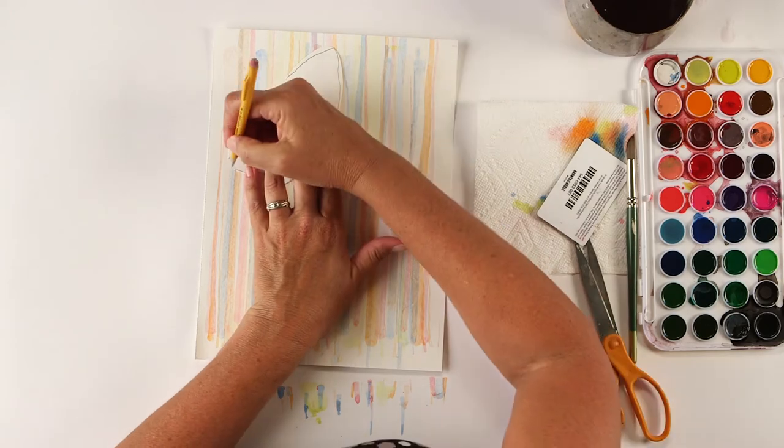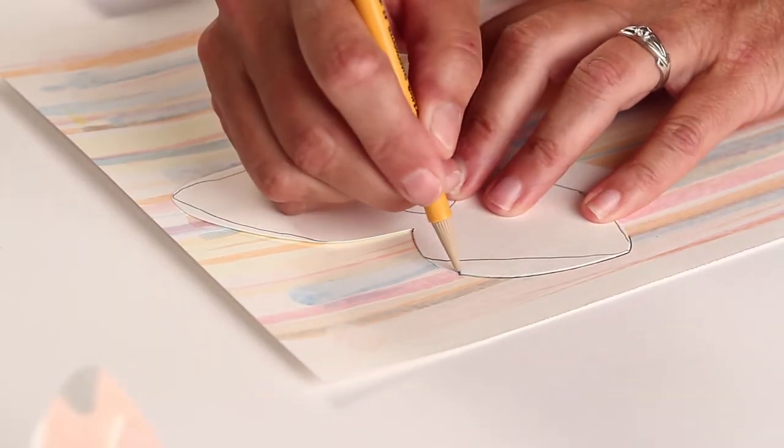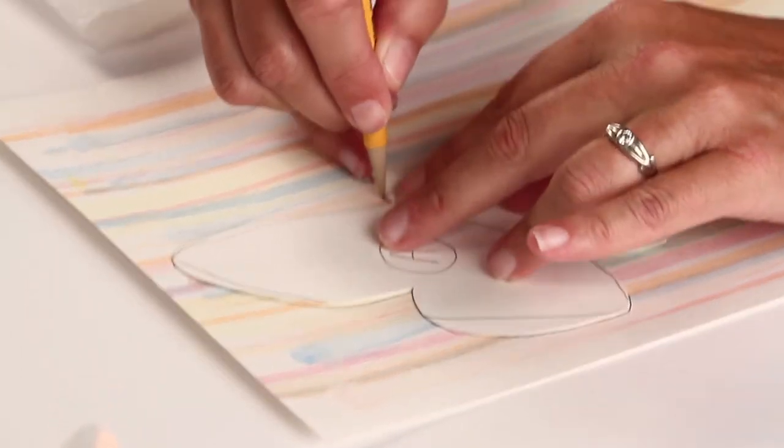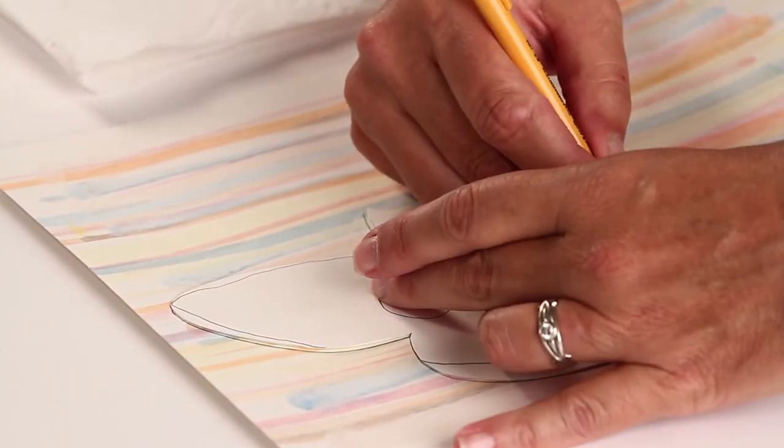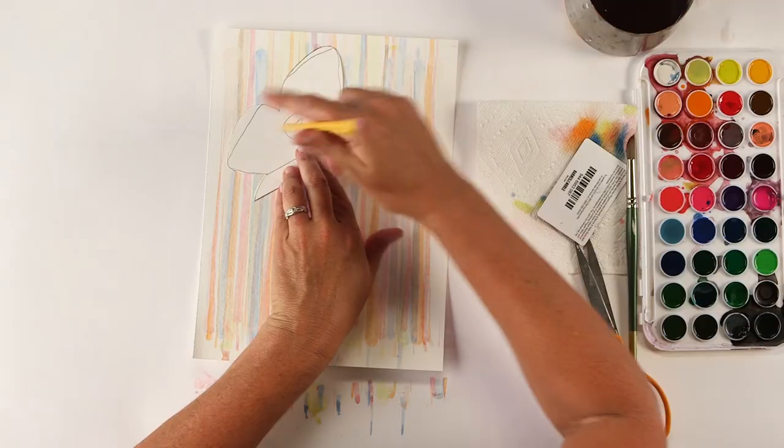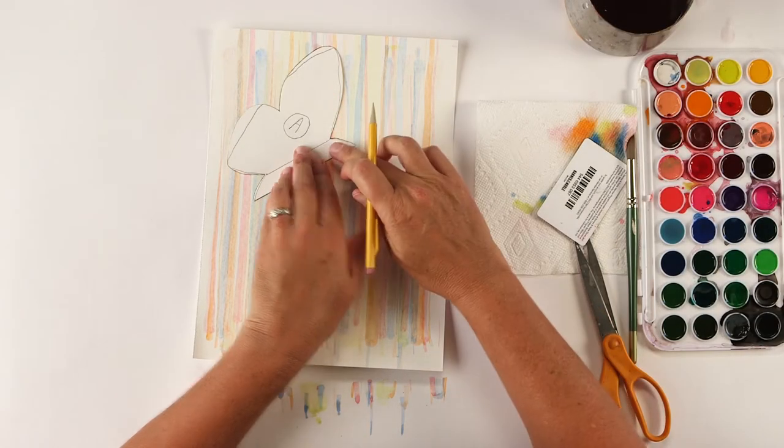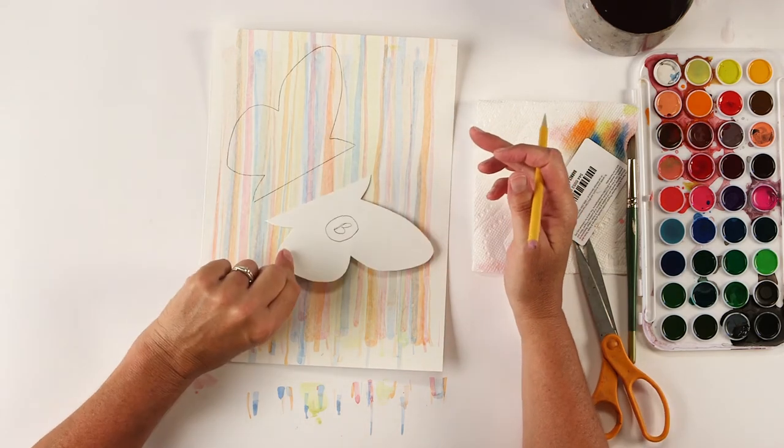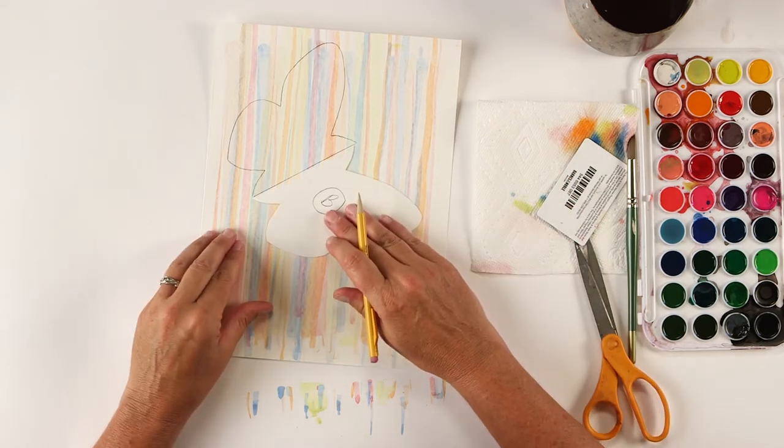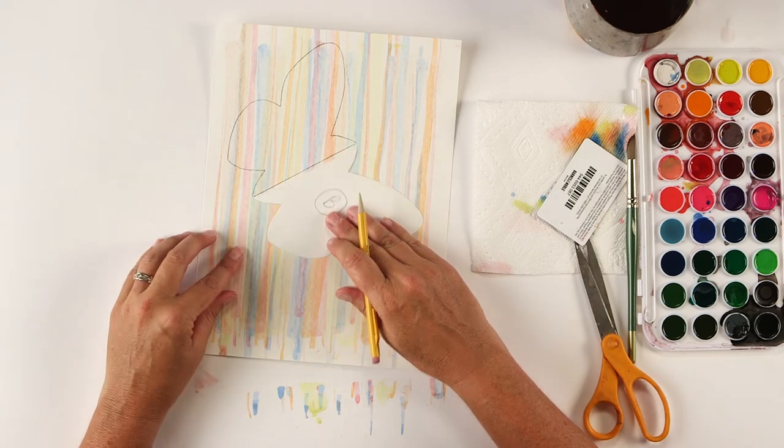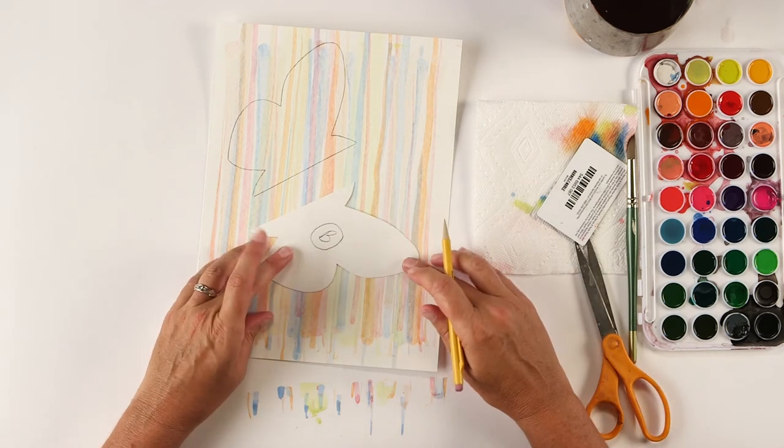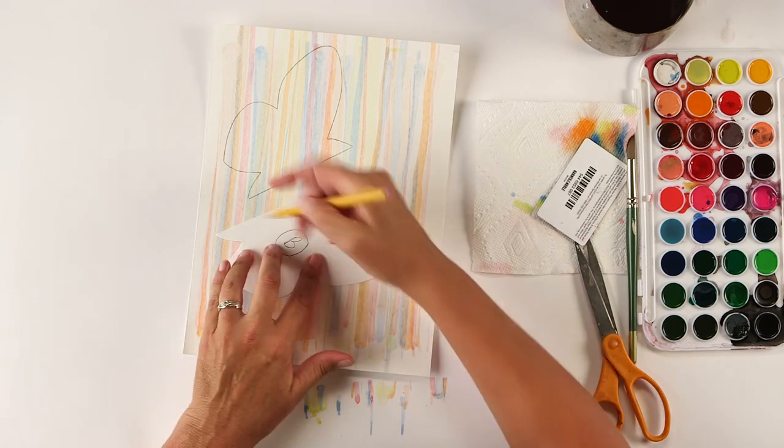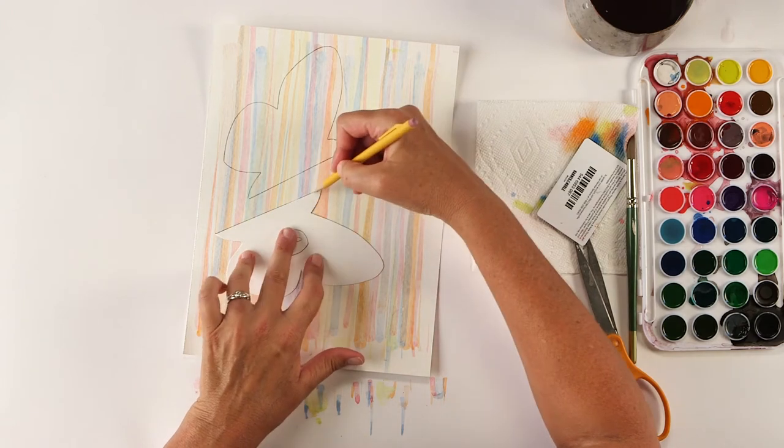And here is my A side. I'm going to use this and just trace around my template or my pattern. Okay. So that's A. Then I have to do a B side. So I'm going to flip it over. And if I want, I can just go ahead and go right up to that edge. But I think I'll just give myself a little bit more room. Maybe I like this color blue down here. So I'm going to make sure that it has that. And now I'm going to do my B side.